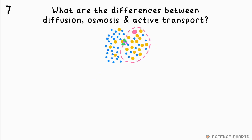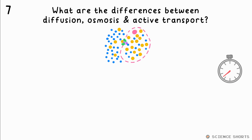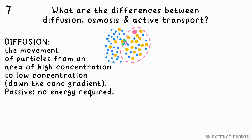Question 7. What are the differences between diffusion, osmosis and active transport? Diffusion is the movement of particles from an area of high concentration to an area of low concentration — down the concentration gradient. This is passive; it doesn't require energy.